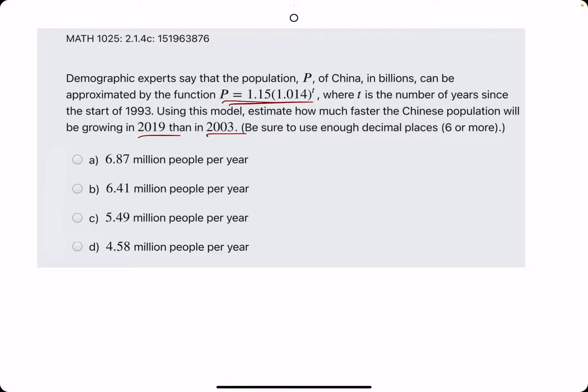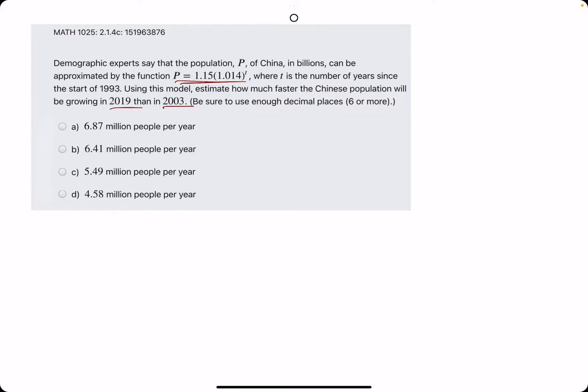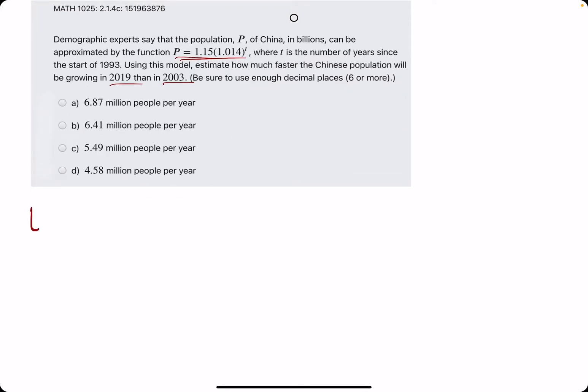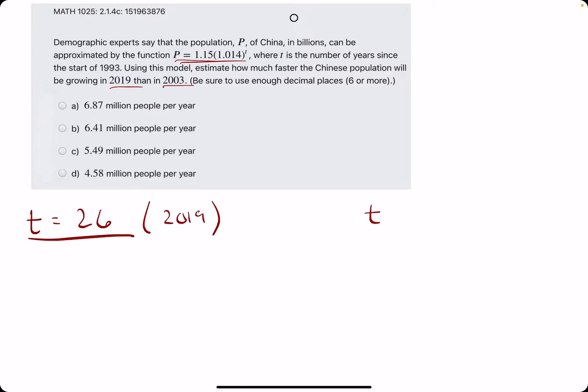P, and using slope formula. Once we have the two rates of change in the separate years, we will just subtract them. So we need the t value for 2019. That should be the number of years since 1993, so it should be 7 plus 19. That is 26, so t equals 26 for 2019. We want the t value for 2003. That's 10 years since 93, so t equals 10.